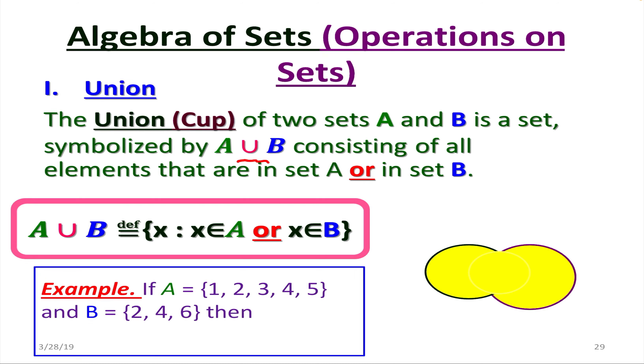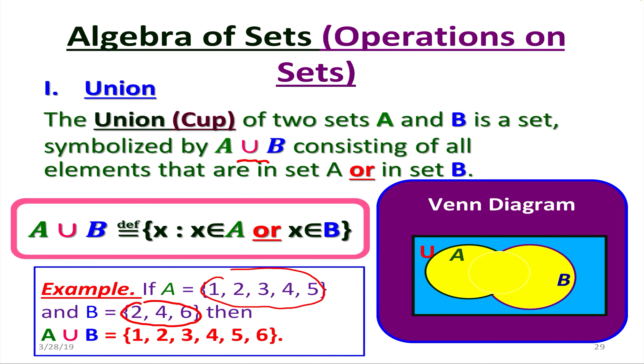For instance, say we have set A containing 1, 2, 3, 4, 5 and set B containing 2, 4, 6. So let's find A union B. It's going to be all elements from A and all elements from B. We want to put them in the same basket. So it's going to be 1, 2, 3, 4, 5, and 6. So we'll just join them.